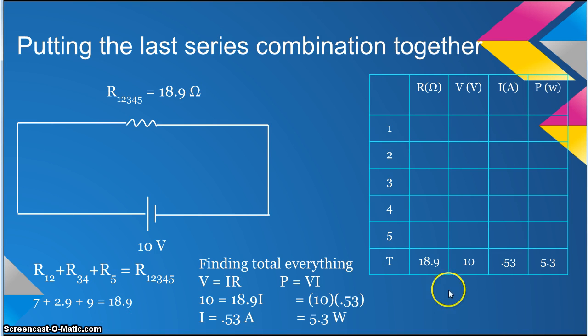18.9 is the total resistance in this circuit. If you create a chart that has a spot for the total current, power, resistance, and voltage, and then a spot for those things in each resistor, it will make this problem easier because you will know what you are looking for and what you still need to find.